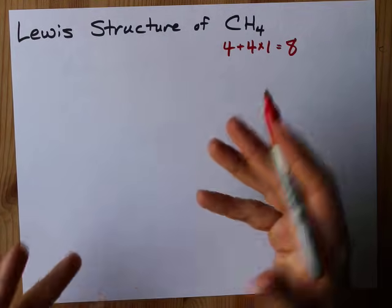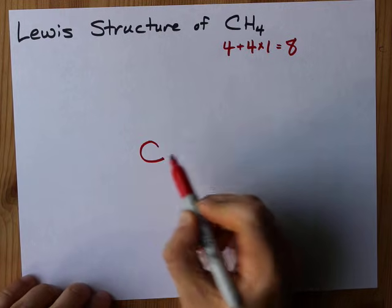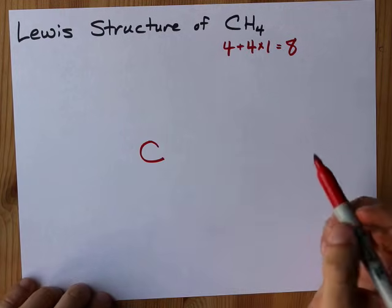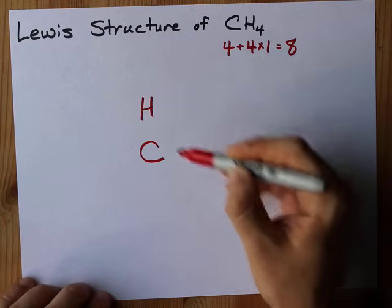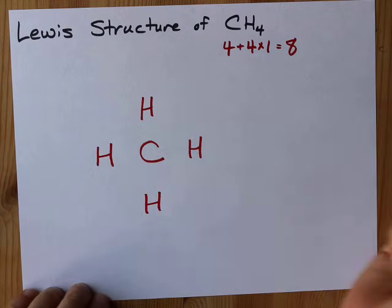I like putting the thing that can make the most bonds in the center. That's carbon. Carbon likes to have four bonds total. And I like putting my other atoms around it symmetrically. There we go. Check.